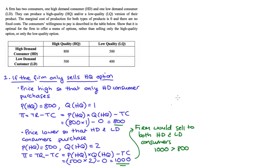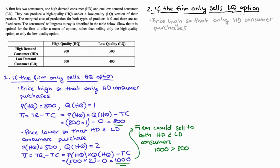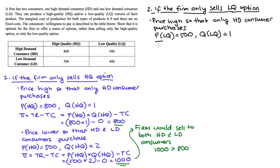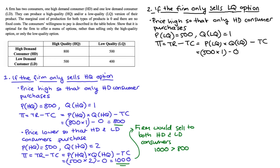Scenario two: if the firm only offers a low quality option. If they only sell to the high demand consumer, they would price the low quality product at $500 — the maximum willingness to pay of the high demand consumer for that option. Quantity would be one because $500 is too high for the low demand consumer who only values it at $400. Profit = 500 × 1 − 0 = $500.